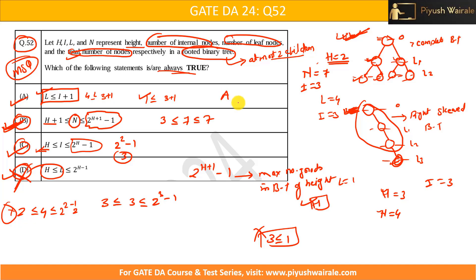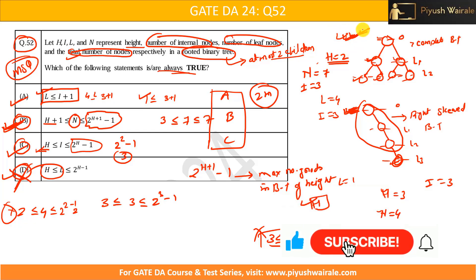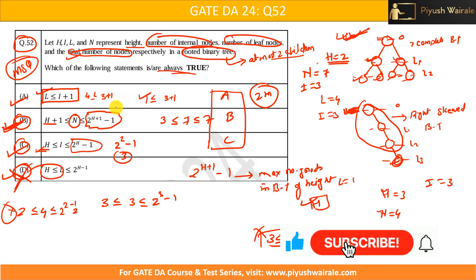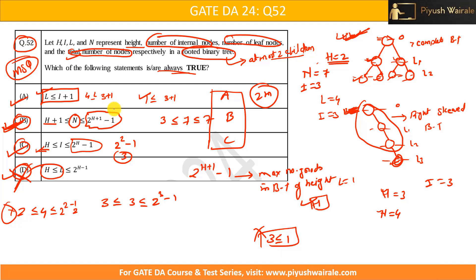So the correct options are A, B and C. This is the correct answer for this particular question, which was asked for two marks. If you understand how binary trees work and what is best case and worst case, you can easily solve these types of questions. I have already discussed this in my videos — you can go through that. That is it from this video. Thank you.